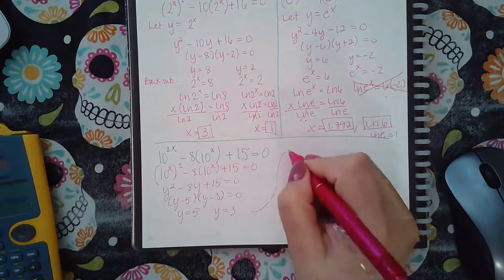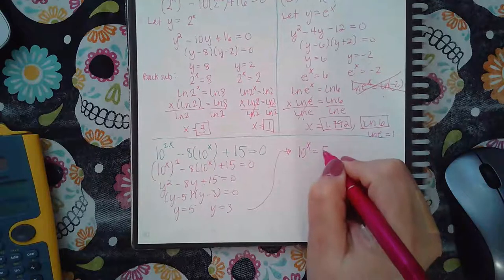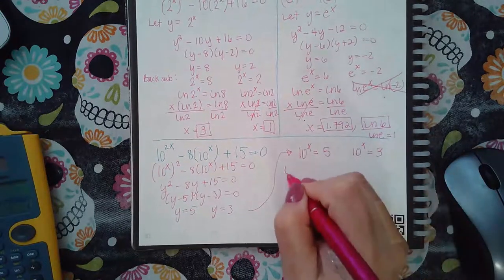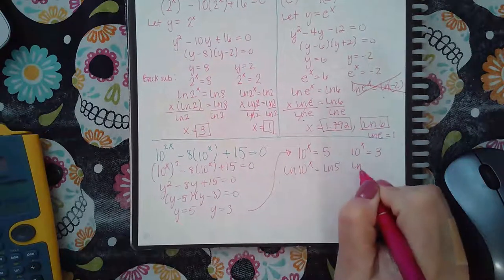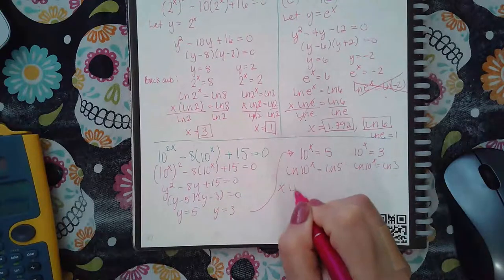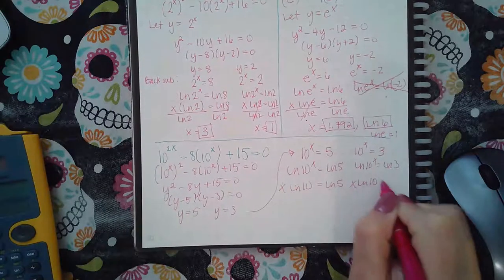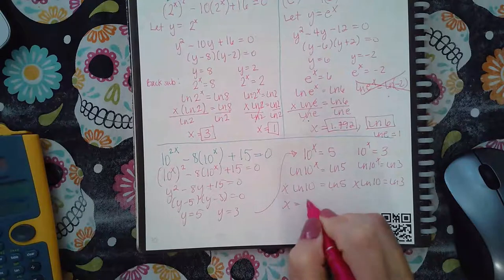And then just backs up. So remember, y represented 10 to the power x. So now you have 10 to the power x equals 5, 10 to the power x equals 3. Do the ln on both sides of the equations. Then bring your powers down. And then divide by the ln of 10 on both sides.